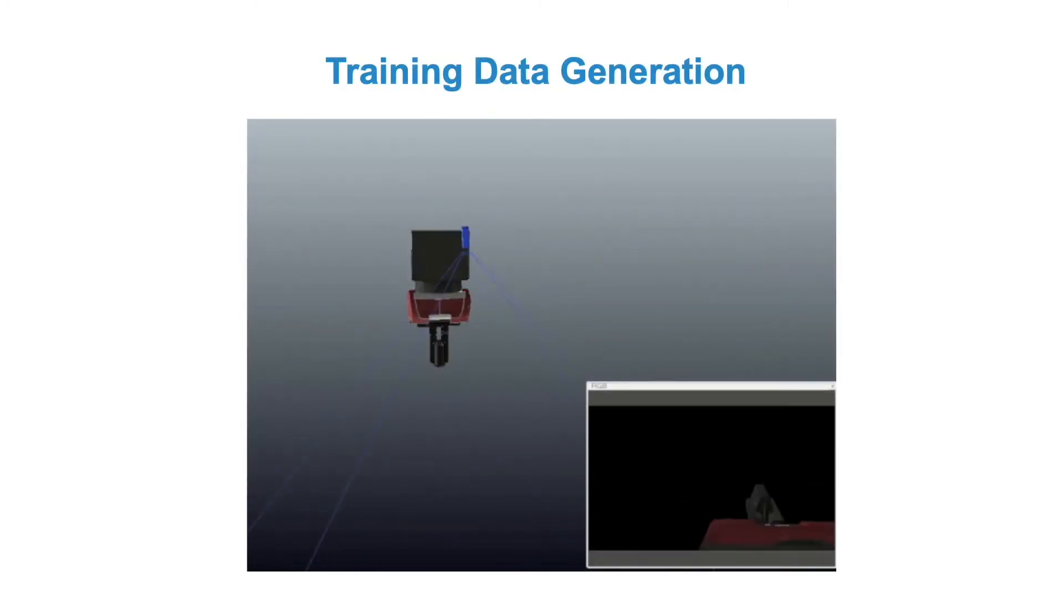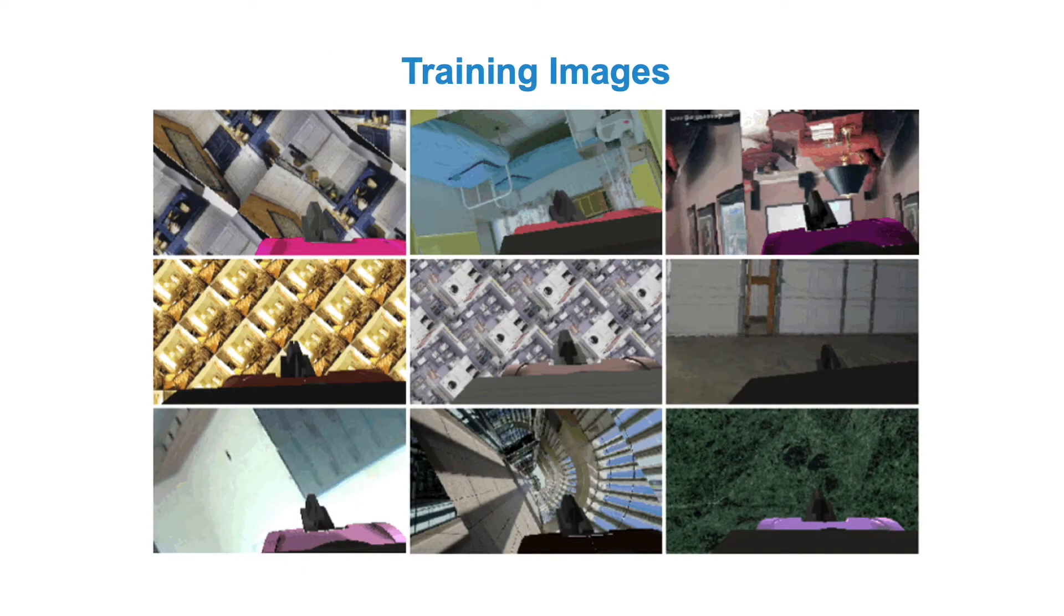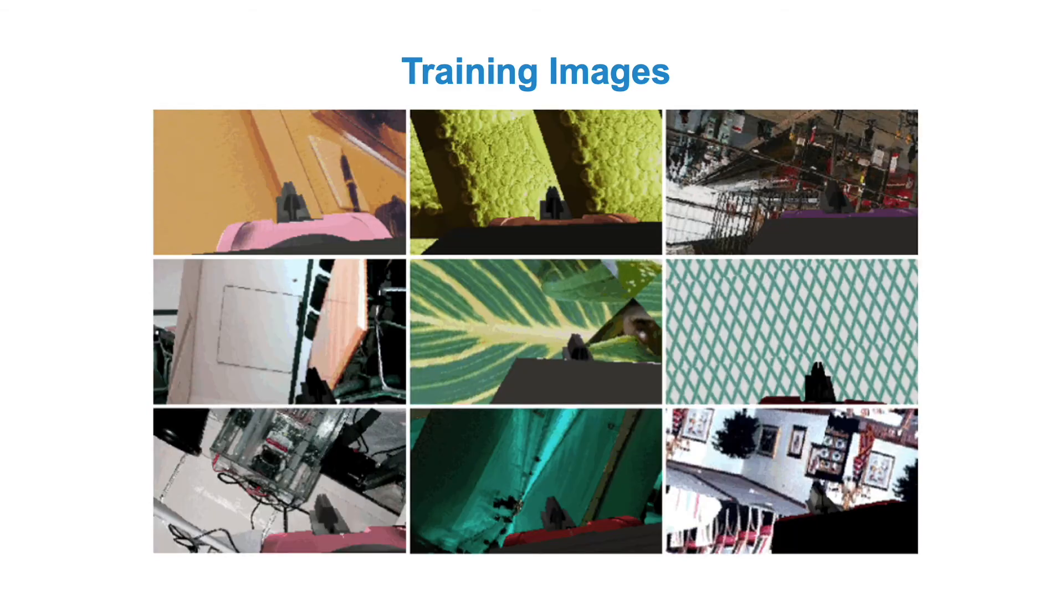We train all our models entirely in simulation using domain randomization for sim-to-real transfer. We randomize the camera extrinsics matrix, the lighting conditions and the colors of the gripper, and also insert random background images.